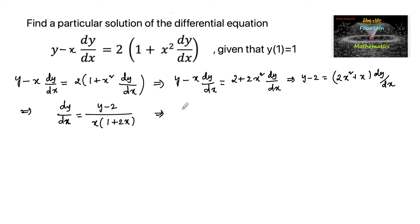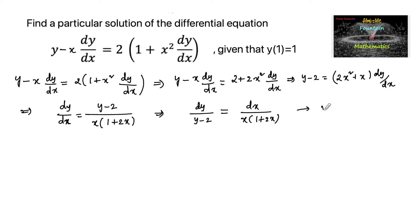So whereby we can express this in variable separable form: dy upon y minus 2 is equal to dx upon x times 1 plus 2x. This is the variable separable form, so the given differential equation is of variable separable type. Let us integrate both sides.